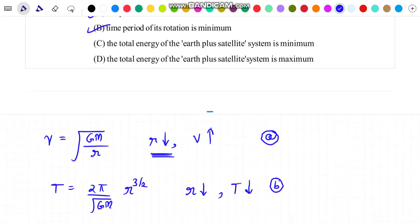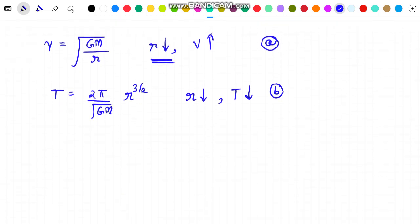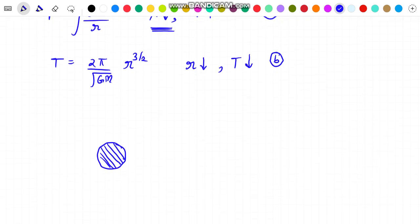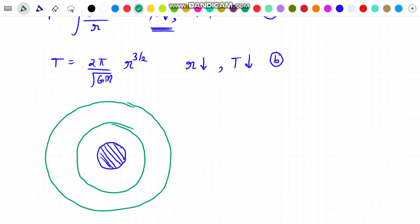Now in order to evaluate the total energy, we know that for such bounded systems, the total energy is always negative. With increase in radius of the orbit, the energy becomes less and less negative.